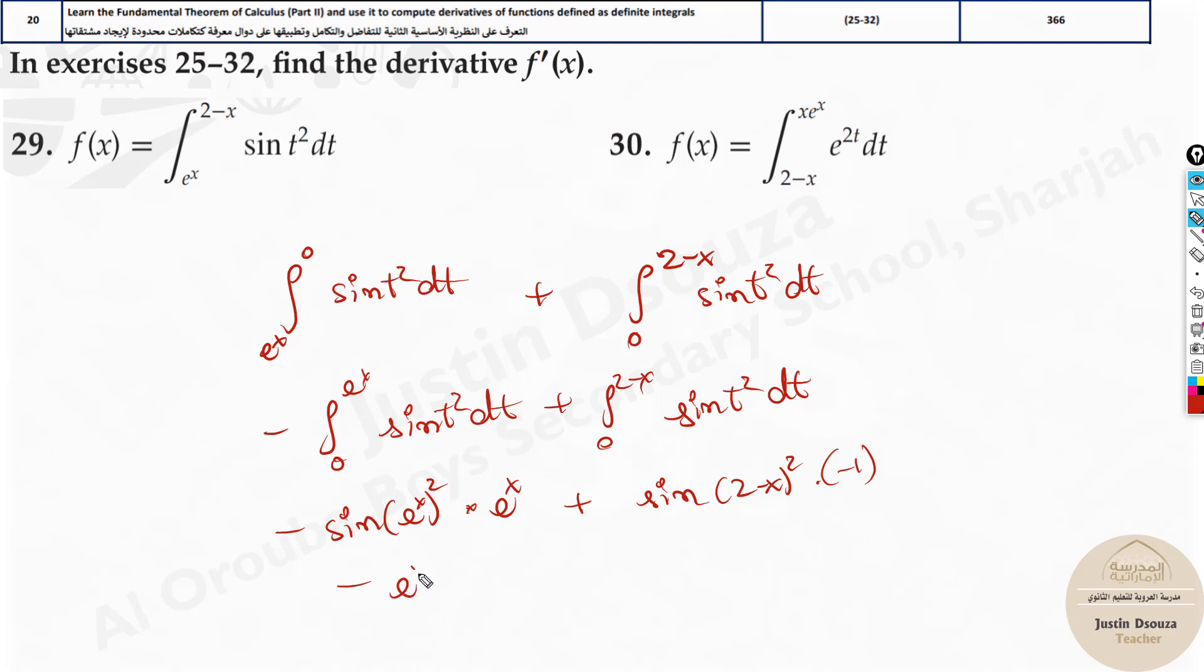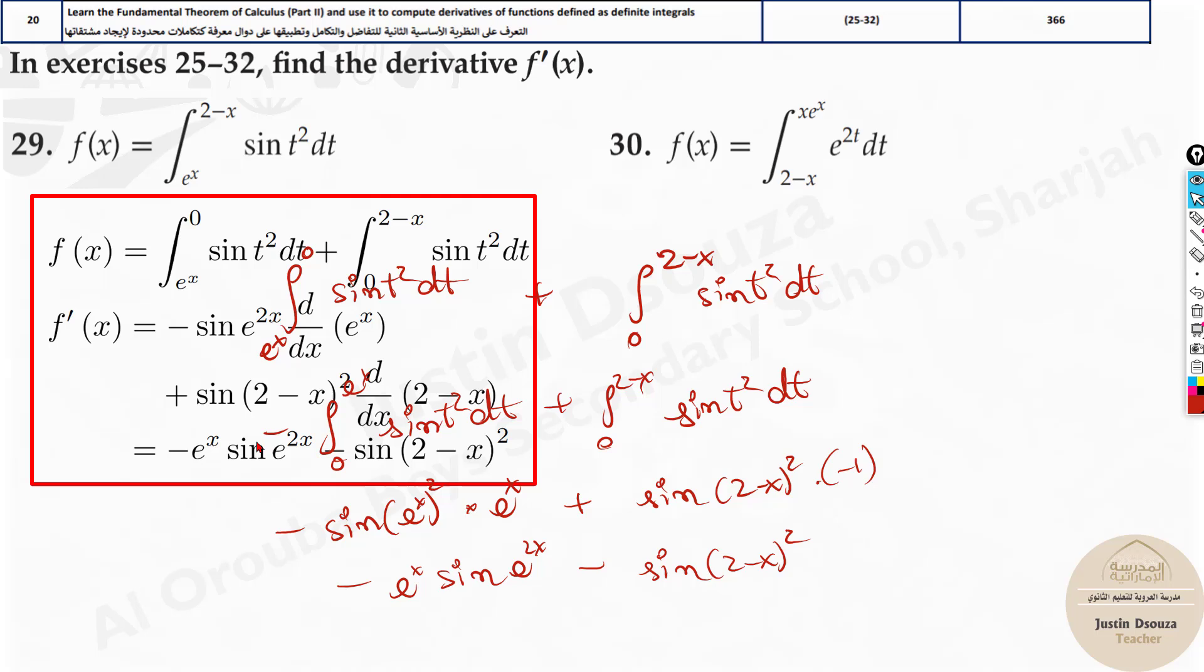So when you simplify, it'll be minus e^x sin(e^(2x)) because I just multiplied 2 and x. It'll be minus. Why? Because minus times plus is minus sin of (2-x) the whole square. So this is how we can easily solve it up. The answer will be that. It's the exact same answer. Sometimes, your answer may be in a different form. The answer will be correct, but it's just in a different form.